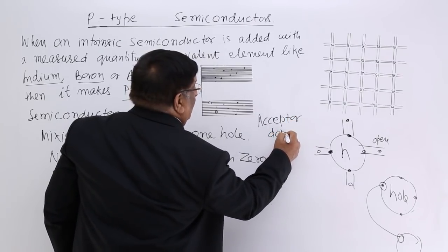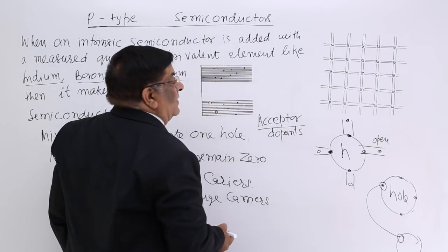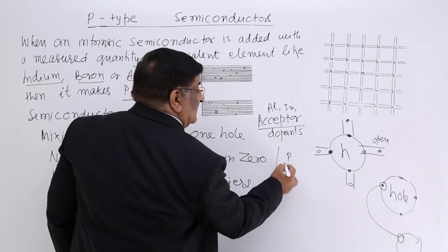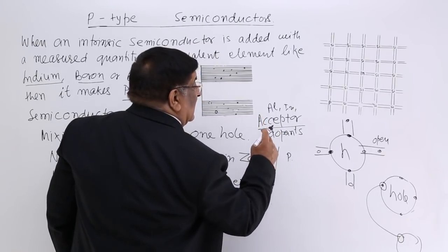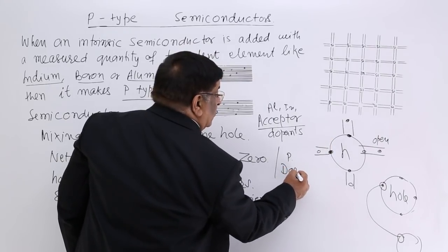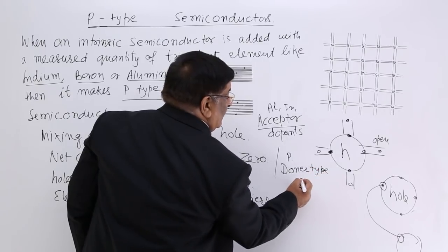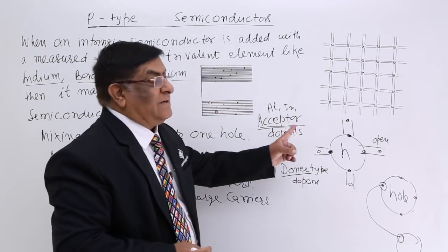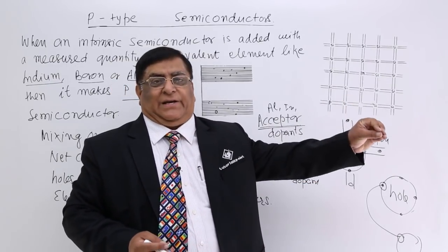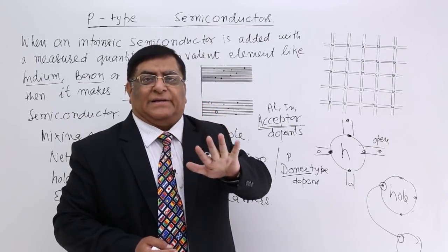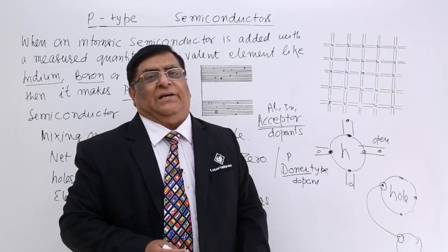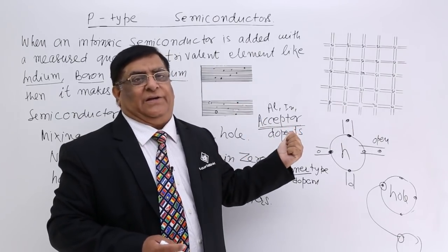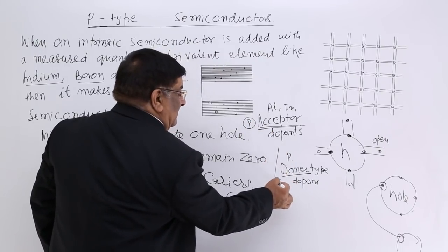These trivalent dopants are called acceptor dopants. In comparison, the pentavalent dopants like phosphorus donate one extra electron, so they are called donor dopants. Remember: donors are pentavalent — they give an extra electron; acceptors are trivalent — they need one more electron and will always accept electrons. Acceptors make P-type semiconductors; donors make N-type semiconductors.